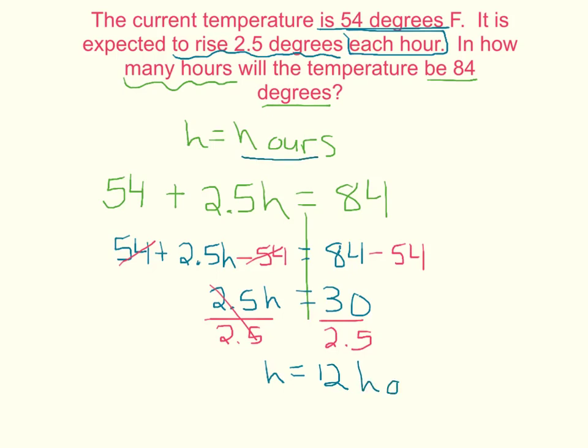and what did we solve for? That's where we solved for hours. In 12 hours, if the temperature rises 2.5 degrees every hour, we will get to 84 degrees.